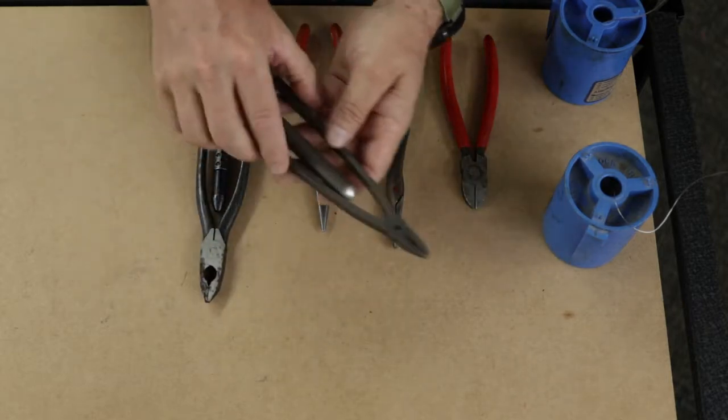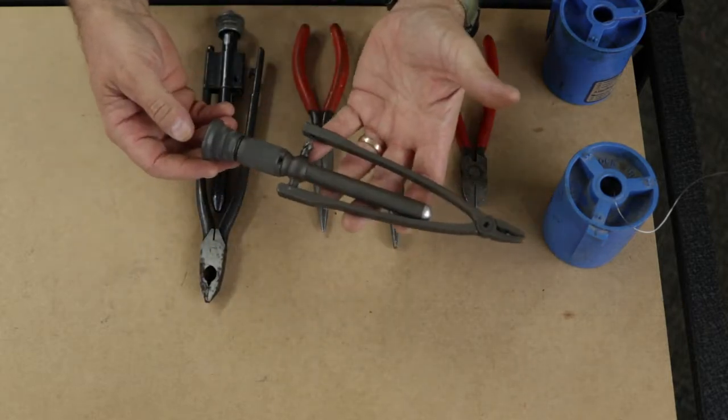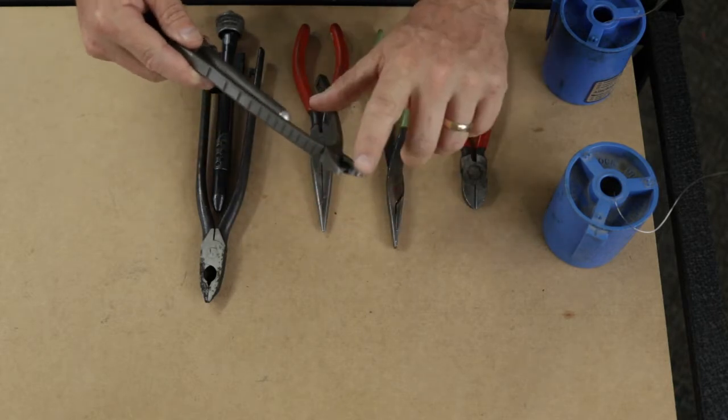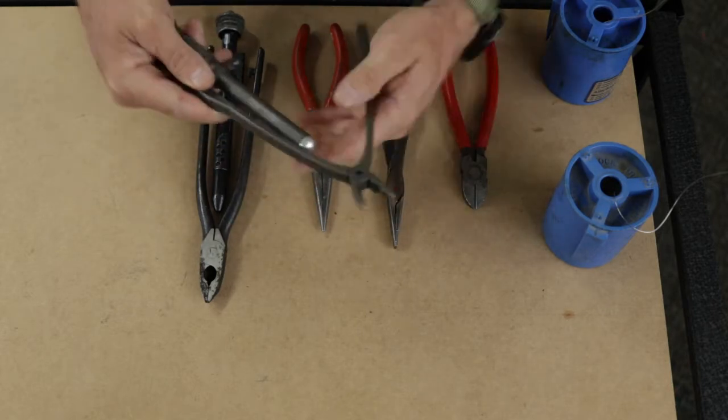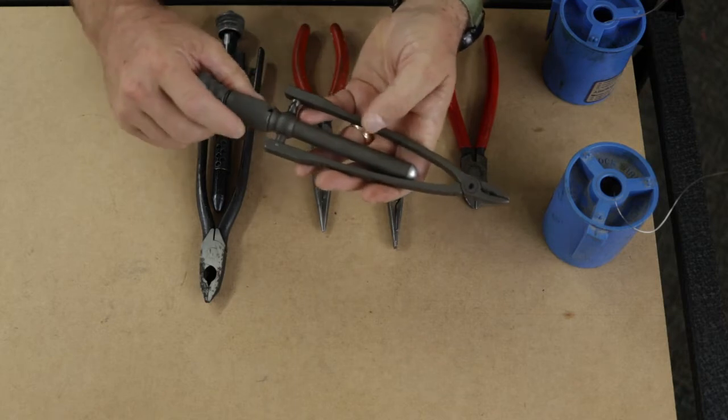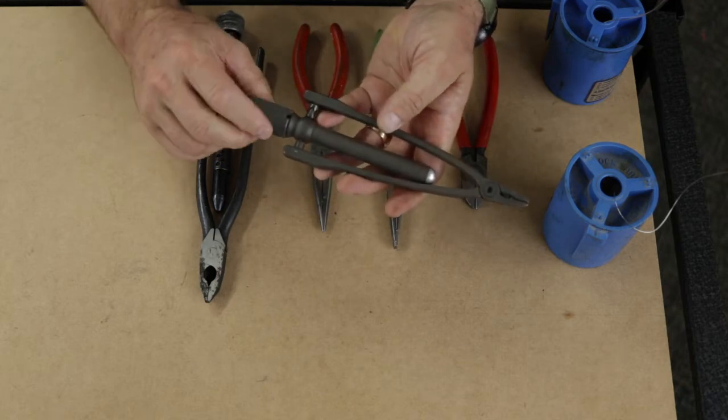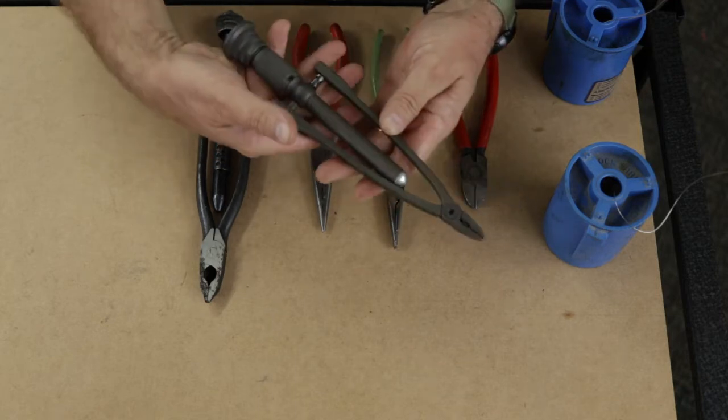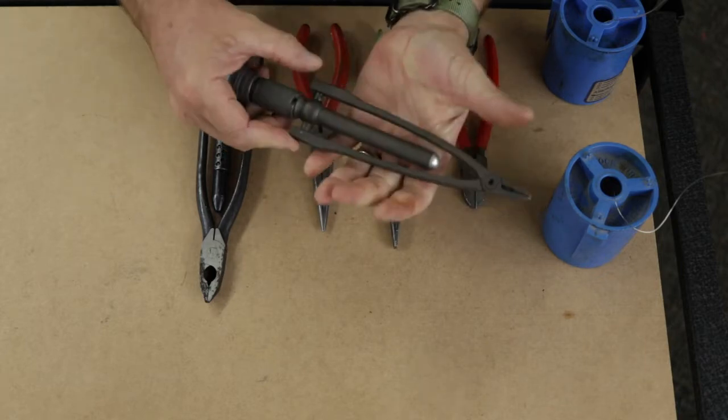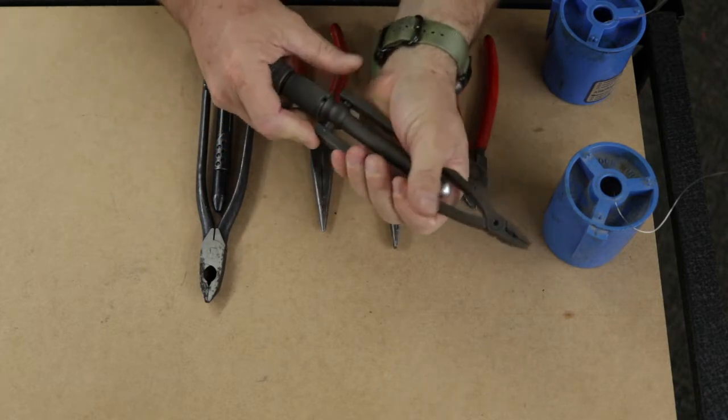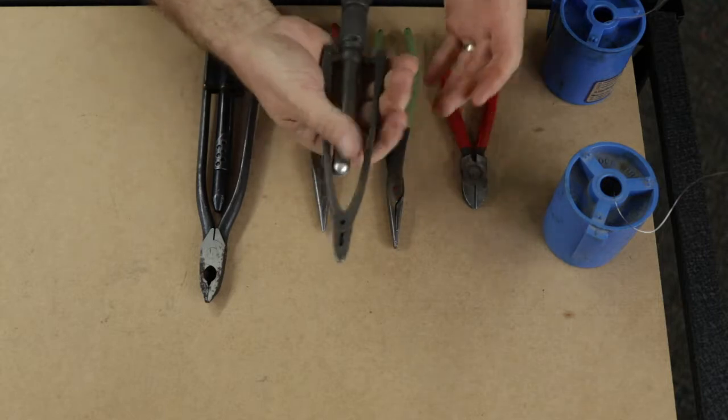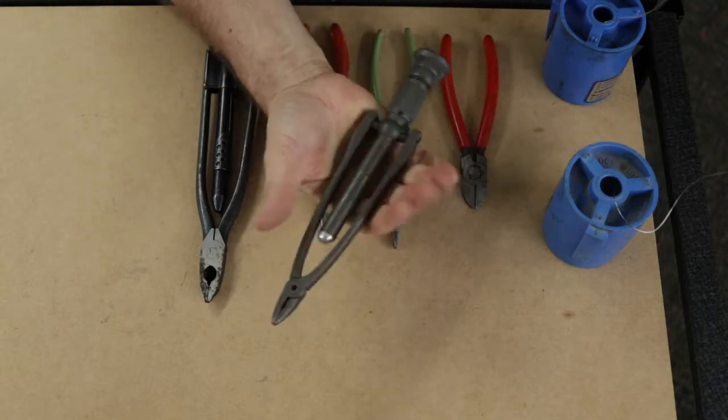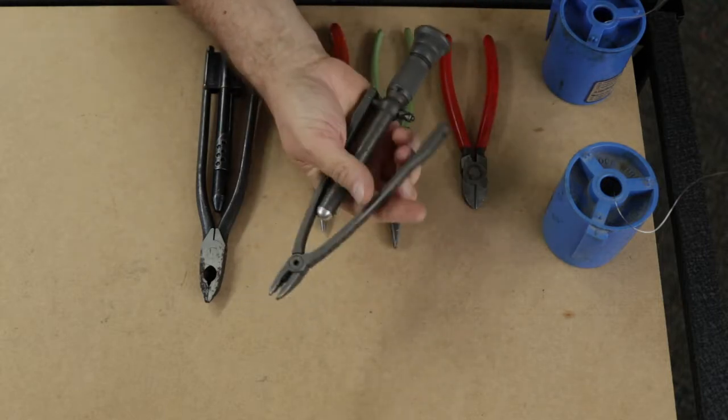These are probably the best pliers that you can get. They have waved jaws so they don't mar the wire. They can change direction so you can pull, you can go left and right and they will lock in a single action of your hand. So it's very simple when you're doing a job you can just do a squeeze and they lock and then another squeeze and they come undone.